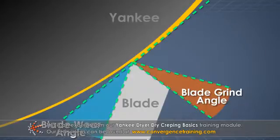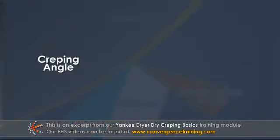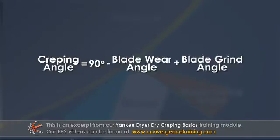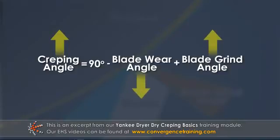The relationship between them is described by this equation: creping angle equals 90 degrees minus blade wear angle plus blade grind angle. This means that the creping angle can be increased by either increasing the blade grind angle or decreasing the blade wear angle.